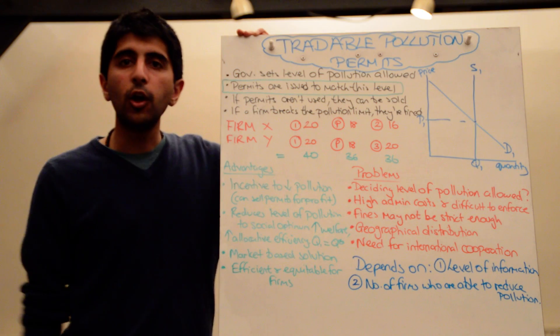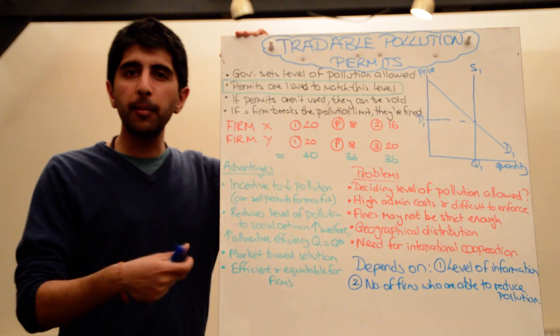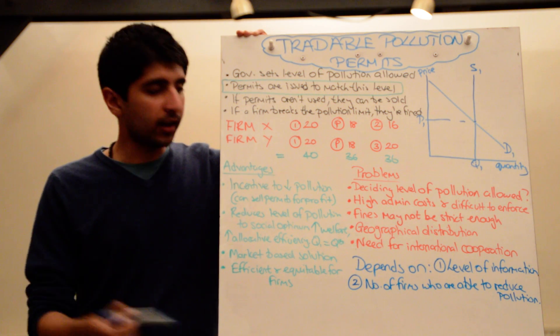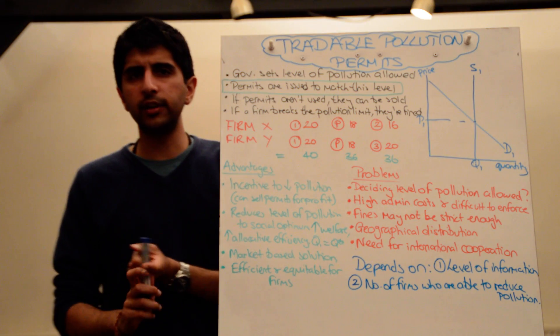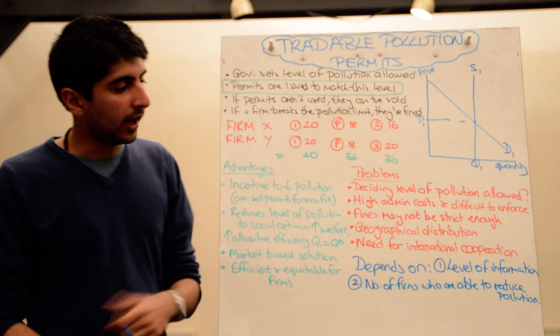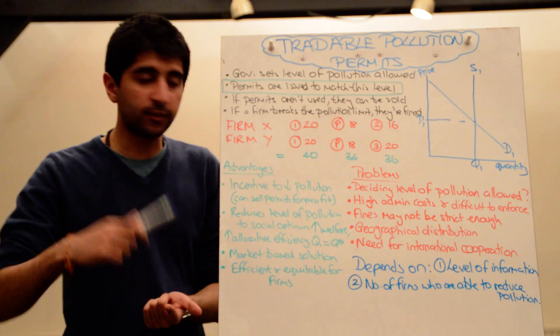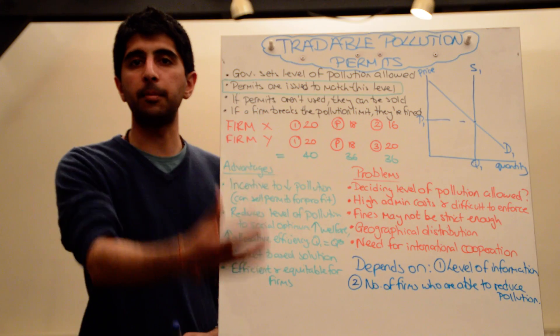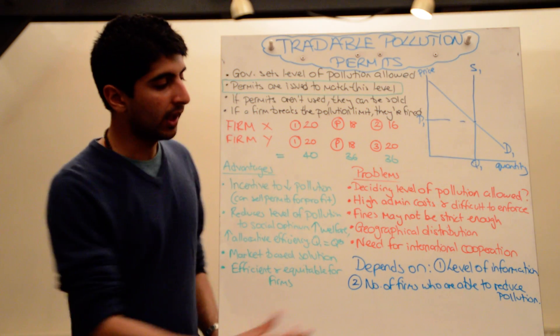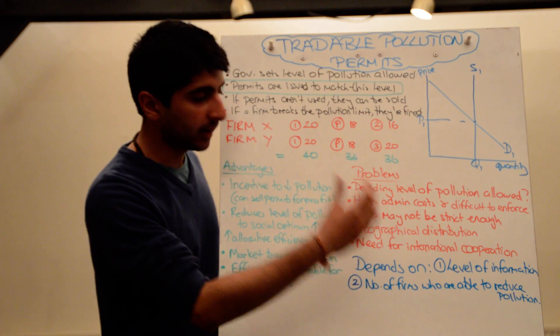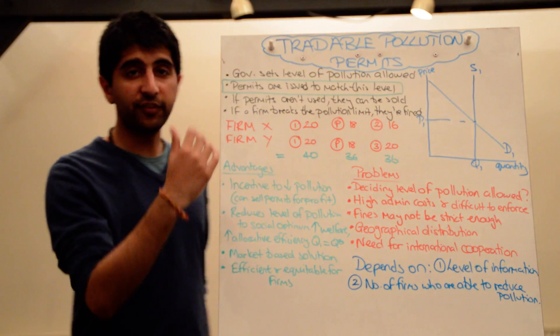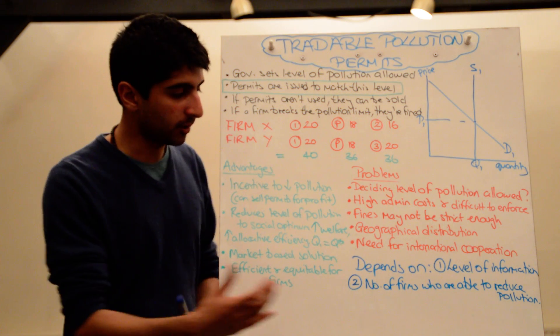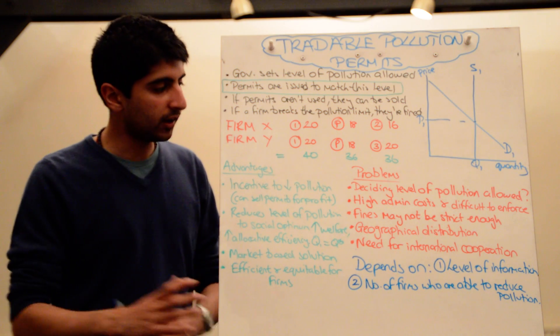It also depends on the number of firms who are able to reduce pollution in the first place. If not enough permits are actually allocated, and lots and lots of firms find it very difficult to reduce pollution, chances are the policy will be massively inefficient. Firms will find it far too costly to reduce pollution, they find it too difficult to reduce pollution, and as a result, there aren't going to be many spare permits to be sold on. As a result, the costs for firms in this policy will be so high, it actually might make the situation worse for firms. It might drive firms out of business, it might lead them to locate elsewhere, there might be mass government failure as a result. So it depends on the number of firms that can actually reduce pollution in the first place. If the number of firms is quite high, chances are this policy is going to work well. Pollution will come down, and for other firms that find it difficult, they can buy spare permits. But if lots of firms find it too difficult and they can't, the policy might not work very well at all.